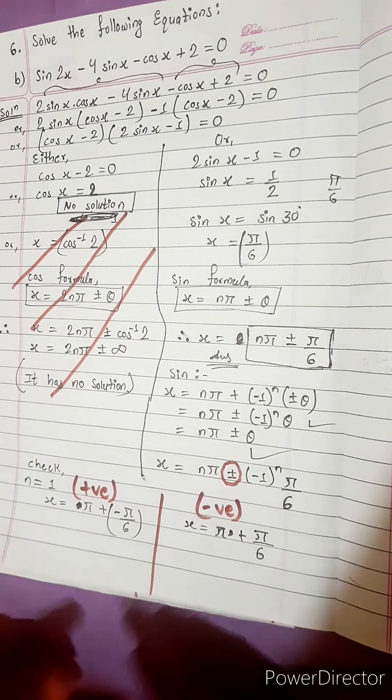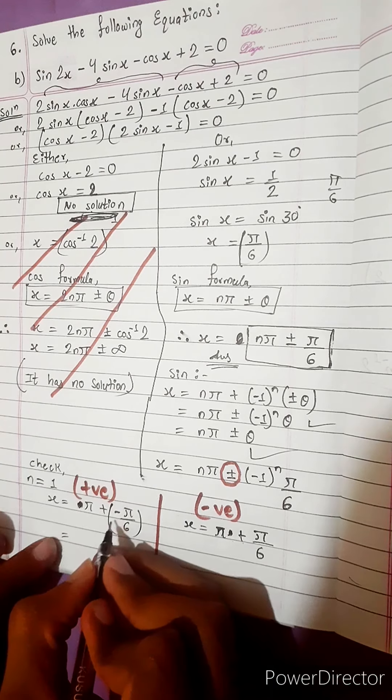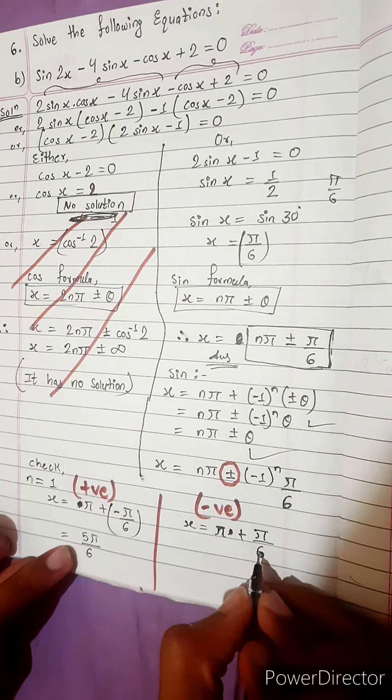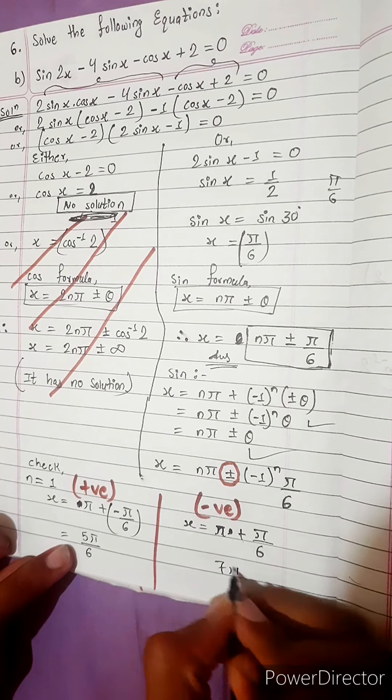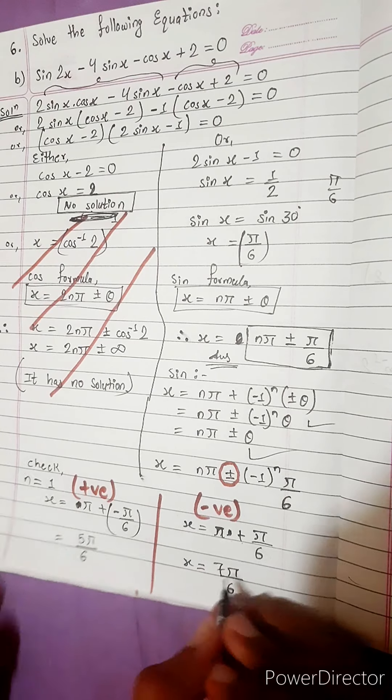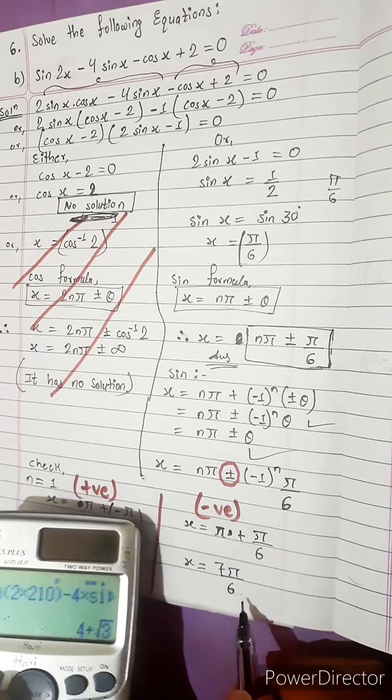Look here, this is taking positive value and this is negative value. From this plus minus, we solved two times, taking positive, taking negative. And this will be 5 pi by 6. This will be plus 1, 7 pi by 6.